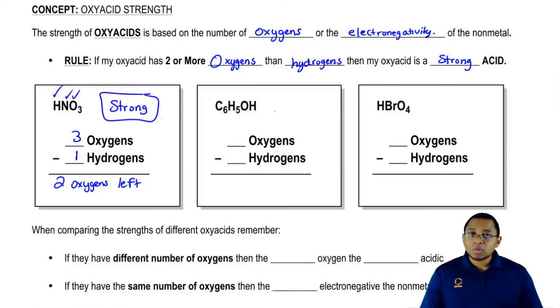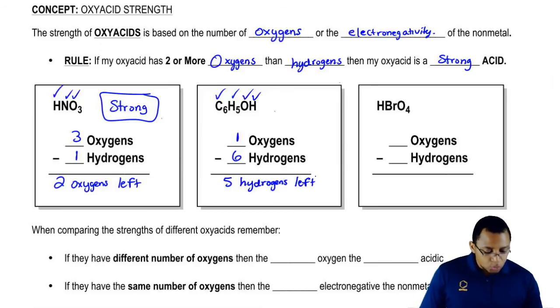Next, the next compound also is an oxyacid because it has H's, nonmetals, and oxygen. The three features of an oxyacid. Let's do the math. We have one oxygen, we have six hydrogens. So we actually have an excess of hydrogen left. We need a minimum of two oxygens left, so this is definitely weak.